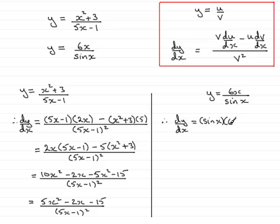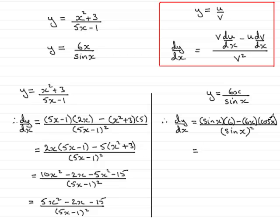Differential of 6x is 6 — put that in brackets. Minus the top of the fraction multiplied by the differential of the bottom of the fraction. So minus the top of the fraction, 6x — again put it in brackets — multiplied by the differential of the bottom of the fraction. Differential of sine x is cos x. That's all divided by the bottom of the fraction squared, so we've got sine x all squared. Now just tidy up each term here. The first term would be 6 sin x — we don't need any brackets anymore for that. And for this one, we could release the brackets and this would look fine as 6x cos x. And it's all divided by sine x all squared, which I can write as sine squared x.